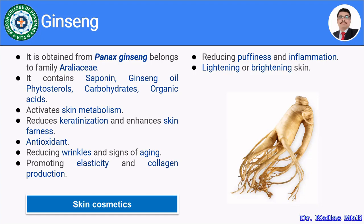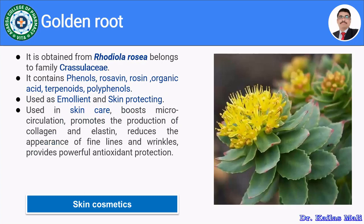Let us see the golden root. The golden root is obtained from Rhodiola rosea, belonging to family Crassulaceae. It contains mainly phenol, rosavin, rosin, organic acids, terpenoids and polyphenols. It is being used as an emollient and for skin protection. It boosts microcirculation in the skin, promotes the production of collagen and elastin, reduces the appearance of fine lines and wrinkles, and provides powerful antioxidant protection. It is used in creams as well as lotions.